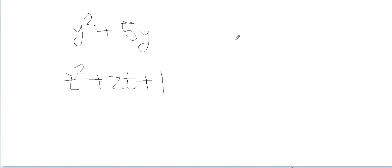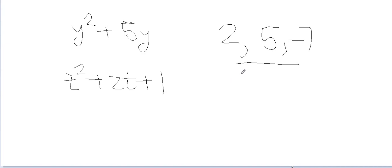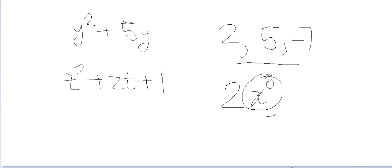Apart from these, 2, 5, and minus 7 are also called polynomials. These are called constant polynomials because in them the variable x has the power of 0, so these expressions are constant. Hence they are called constant polynomials. Similarly, 0 is also a polynomial — it is called the zero polynomial.